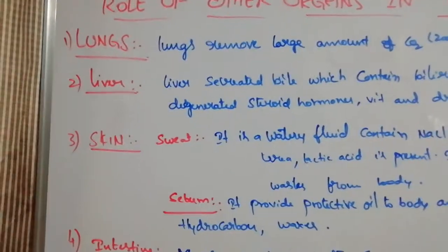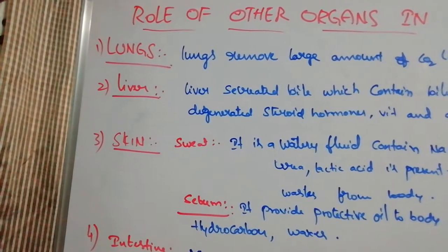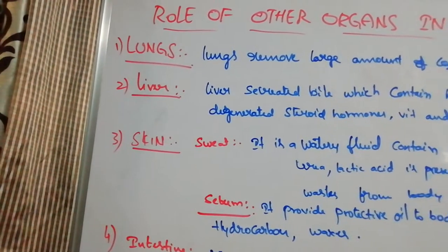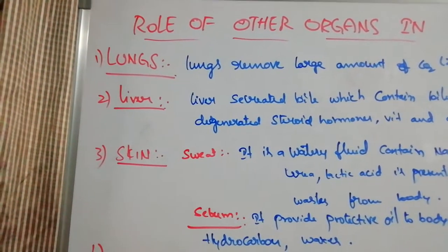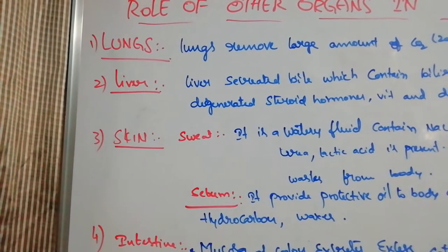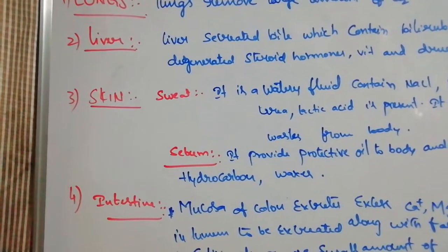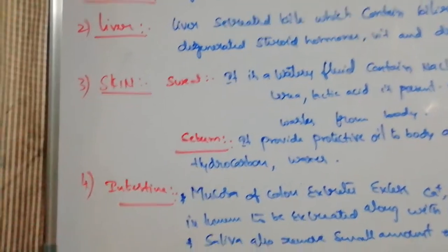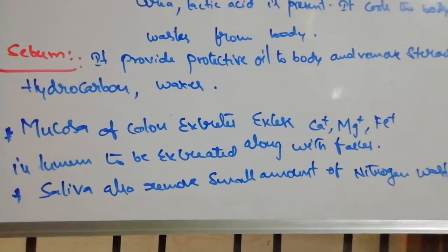Like lungs, liver, skin and intestine are other excretory organs which are playing a main role in removing various substances. Lung is removing carbon dioxide. Liver is removing bilirubin, bile verdine, cholesterol, degenerated hormones, vitamins, drug. Skin is removing urea, lactic acid, waxes. Intestine is removing ions like calcium, magnesium and iron.